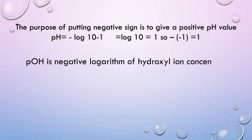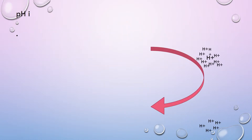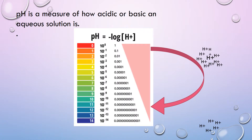pOH is the negative logarithm of hydroxyl ion concentration. pOH is equal to the negative log of hydroxyl ion concentration. pOH is the measure of how acidic or basic an aqueous solution is.